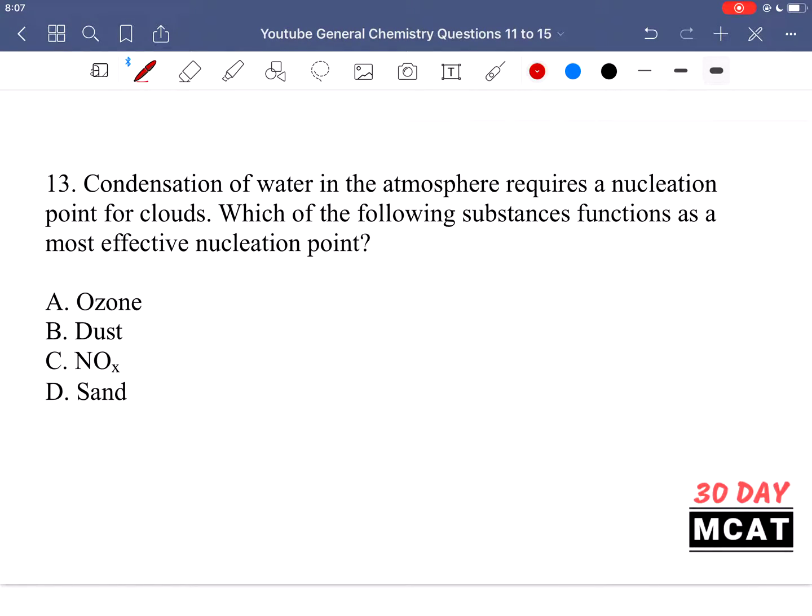In question 13, it says condensation of water in the atmosphere requires a nucleation point for clouds. Which of the following substances functions as a most effective nucleation point? So condensation, meaning the formation of clouds, needs some nucleation point. What's the most effective type of nucleation point? So something on which water droplets can begin to clump around and then form bigger molecules or a bigger structure, meaning clouds in this case. And this also applies for any crystals that are forming in a solution as well. You need something for this entire structure to latch onto at the beginning before it can form. So this usually requires some type of small solid particle that is present in the atmosphere.